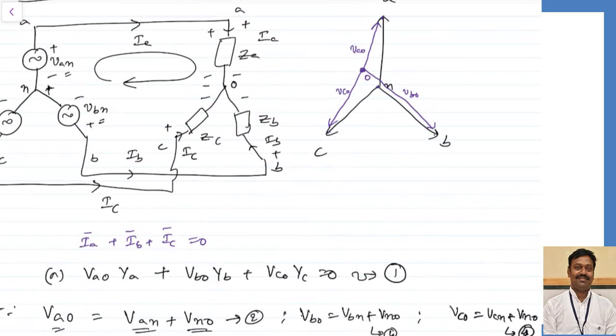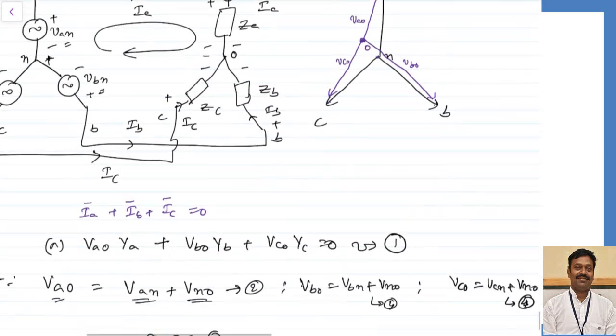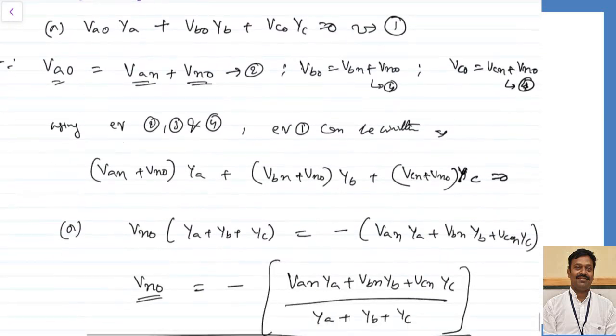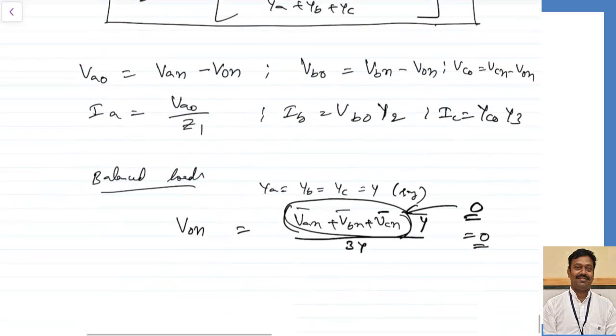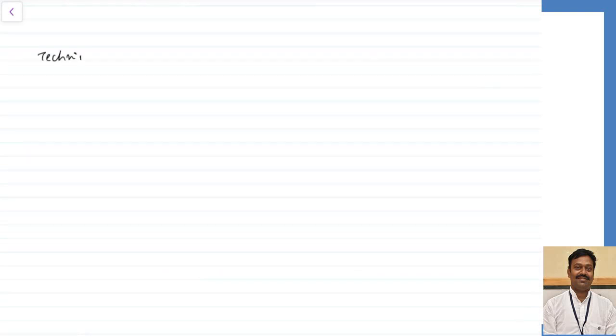To clarify this further, we will take an example. This is one way to solve — by calculating VON. There are other methods as well. Technique 2 is star-to-delta conversion, which is the easiest of all. Let us see how to do this.